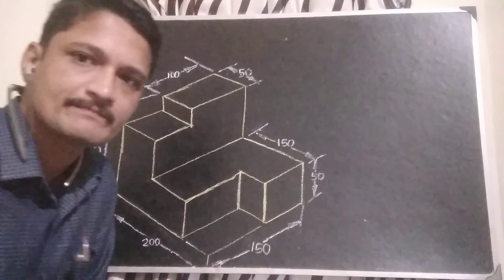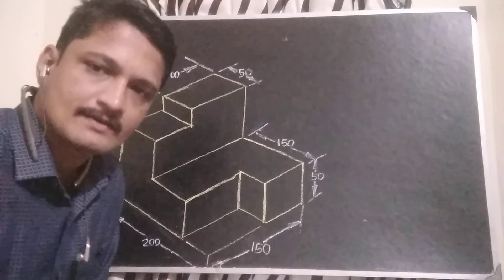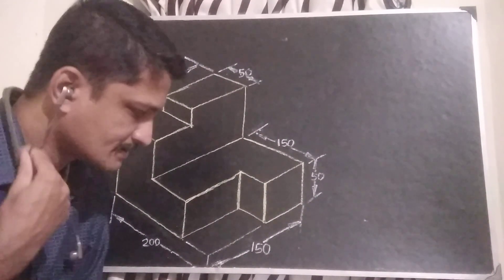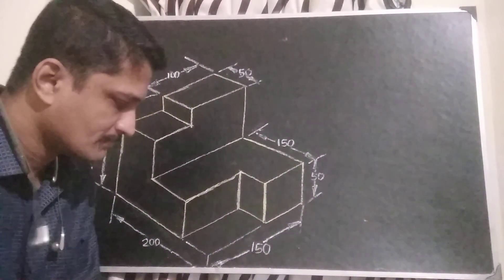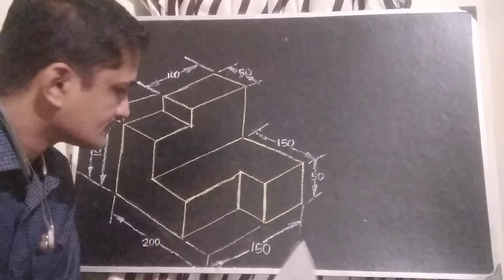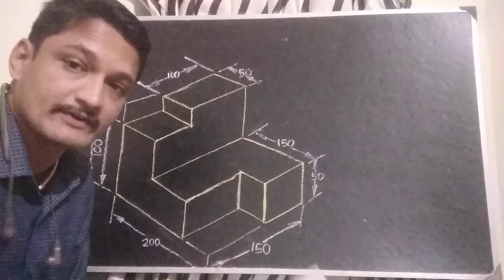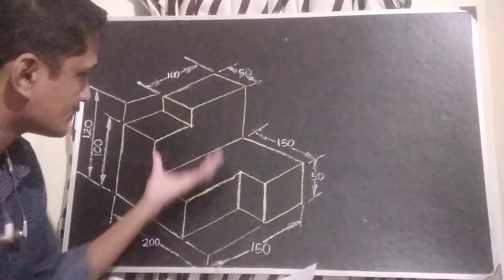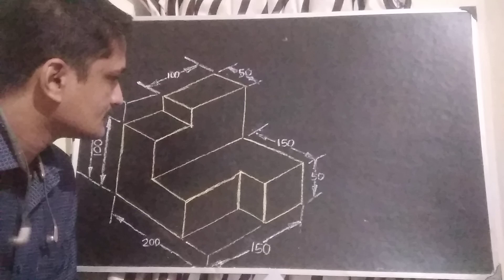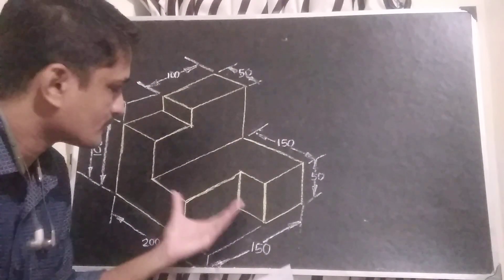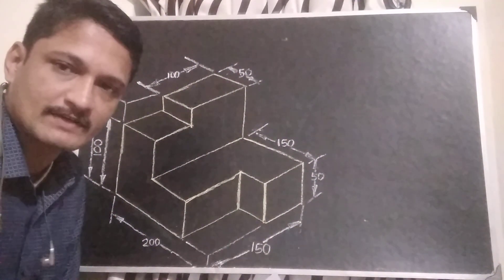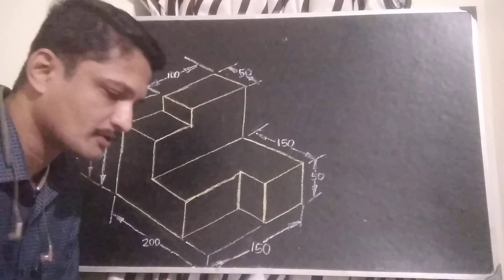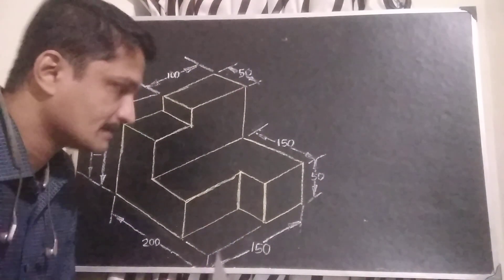Good morning. I am going to class Multi View Projection. Multi View Projection means you have given an isometric figure, then from this isometric figure, we have to draw orthographic views — that means front view, top view and side view.